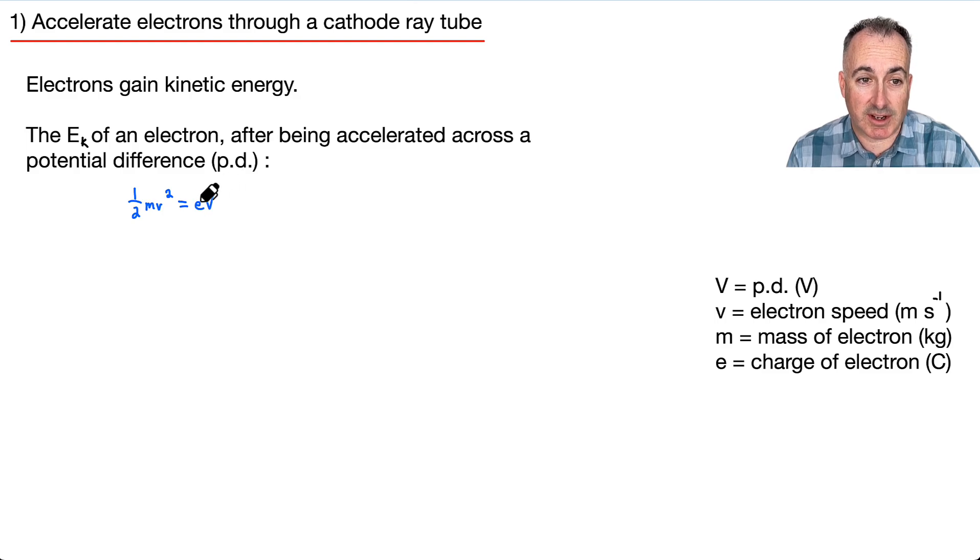We have an equation for it. This is the kinetic energy of an electron: one-half m v squared equals e times V. E is the charge of an electron. So let's try to get the speed out of this and isolate for that.